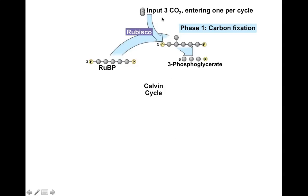In carbon fixation, we add one molecule of CO2 per cycle — three total to get one G3P out. We take CO2 and mash it onto the five-carbon compound ribulose bisphosphate. We get a very unstable six-carbon intermediate that can't exist for long, so it breaks down into two three-carbon molecules called 3-phosphoglycerate.